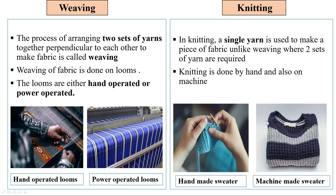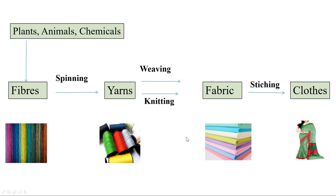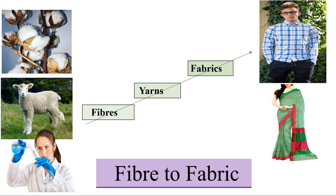This chart summarizes the entire chapter: fibers obtained from plants, animals, or chemicals are converted into yarns by spinning. Yarns are converted into fabric by weaving and knitting, and ultimately fabrics are converted into clothes by stitching. I really hope that you have now learned all the steps from fiber to fabric.